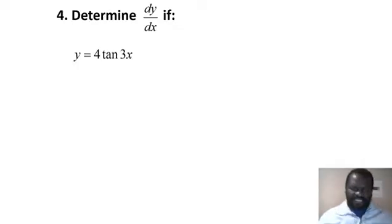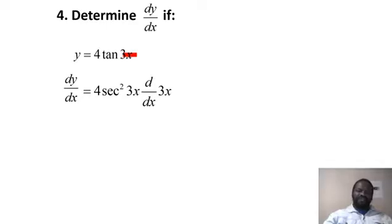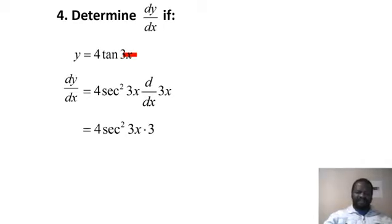For the last question, you have a tan function. The derivative of tan is on your list of formulae. Identify u = 3x, so dy/dx = 4sec²(3x) × d(3x)/dx = 4sec²(3x) × 3 = 12sec²(3x). That's the answer for this activity.